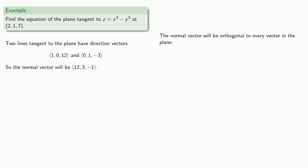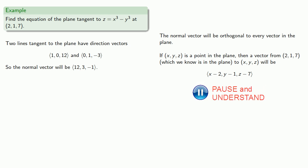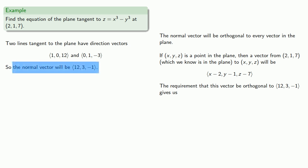So remember, the normal vector will be orthogonal to every vector in the plane. So if (x, y, z) is a point in the plane, then a vector from (2, 1, 7), which we know is in the plane, to the point (x, y, z) will be (x-2, y-1, z-7). And the requirement that this vector be orthogonal to the vector (12, 3, -1) gives us the equation where the dot product equals 0. If we expand that, we get the equation of the plane.